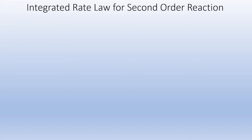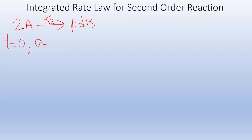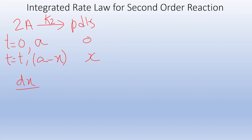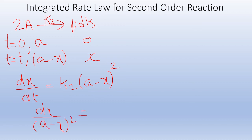In the same way, we can write the integrated rate law expression for a second order reaction. For a second order reaction, the general equation is 2A giving products, and let k2 be the rate constant. At time t equal to 0, let A be the concentration of reactant and 0 be the concentration of product. After a time t seconds, if x amount of product is formed, let (A minus x) be the concentration of reactant. The rate expression is dx/dt equals k2 into (A minus x) raised to 2.